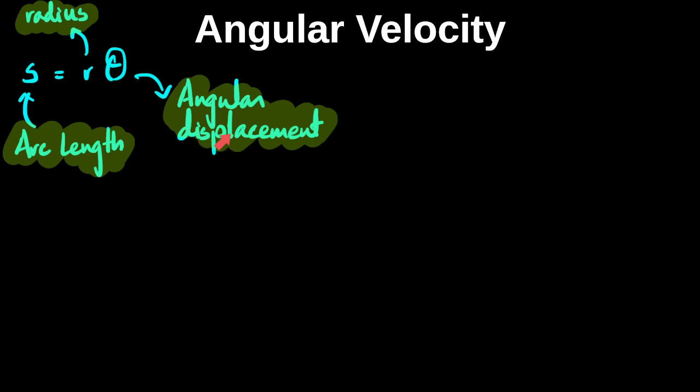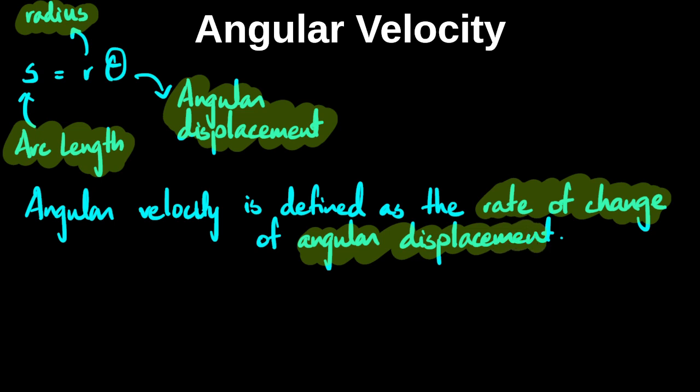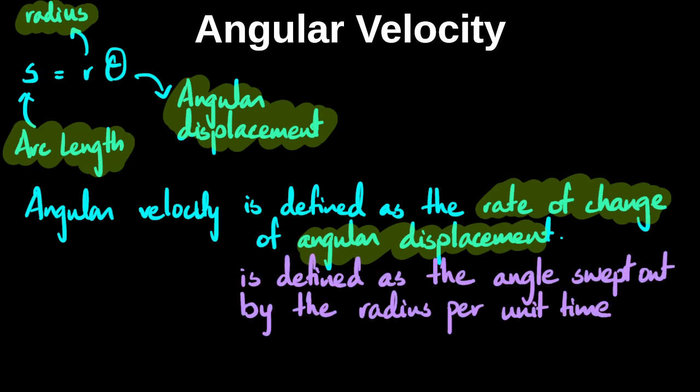Now, if we have to define how fast an object is tracing out circles, we'll be talking about something called the angular velocity or angular speed. Pretty much like linear velocity, angular velocity is the rate of change of angular displacement. Rate of change simply means that this formula has time as a denominator. Another way to define this, which the examiner actually prefers, is that the angular velocity is defined as the angle swept out by the radius per unit time.